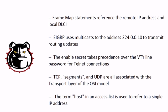Frame maps do reference the remote IP address — the address we're hoping to reach — and then the local DLCI number. The second statement is indeed true: EIGRP does use multicast, and the multicast address it uses is 224.0.0.10. Watch the third one carefully — it's easy to see 'enable secret takes precedence' and say true, but the enable secret takes precedence over the enable password, not over the VTY line password set up for Telnet connections. So that one is false.